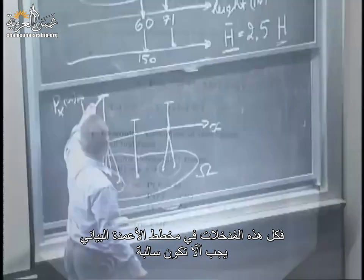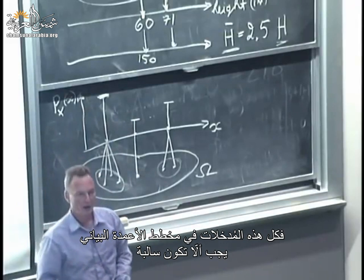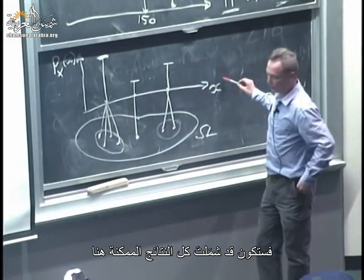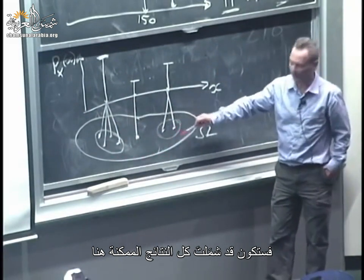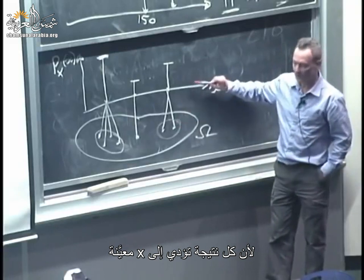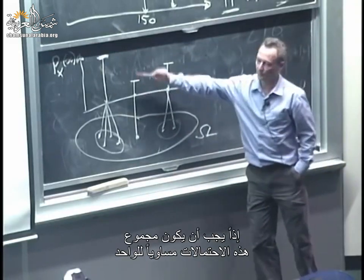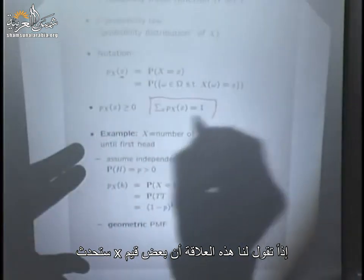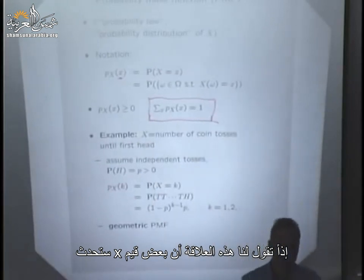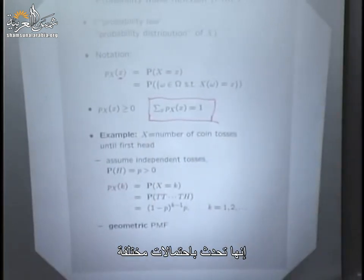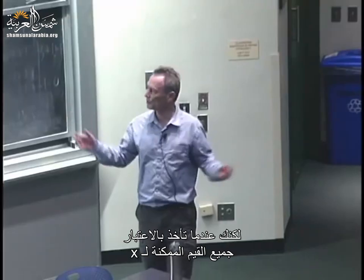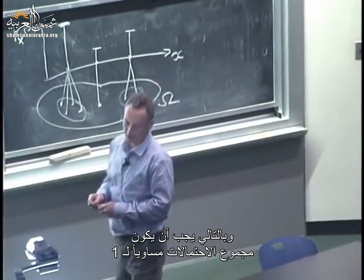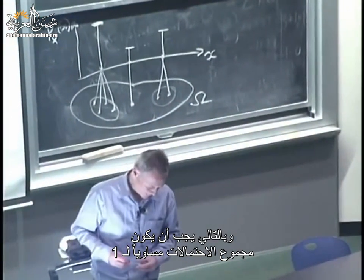The bar graph is a function we denote by lowercase p, capital X — called the PMF. The capital X indicates which random variable we're talking about, and it's a function of little x, the range of values the random variable takes. The value of the PMF at a particular number little x is the probability that the random variable takes on that numerical value. Since these are probabilities, all entries are non-negative, and they must sum to 1.